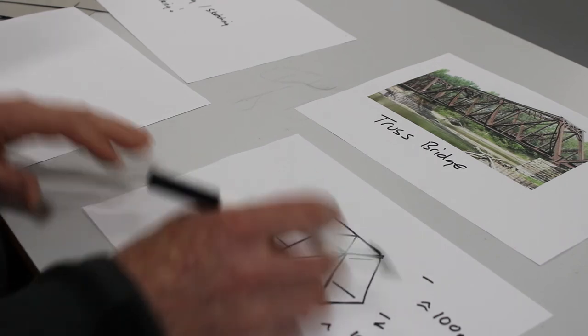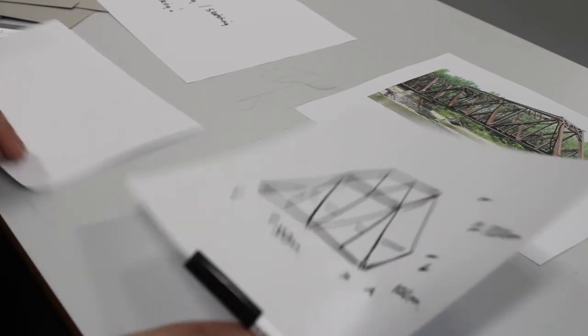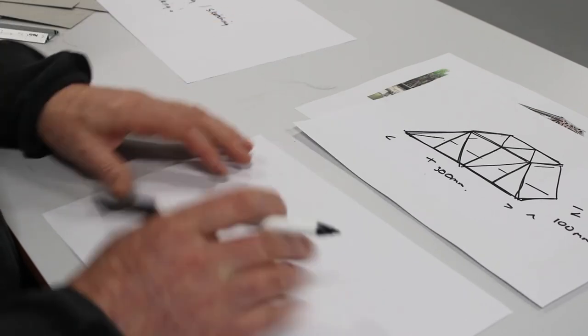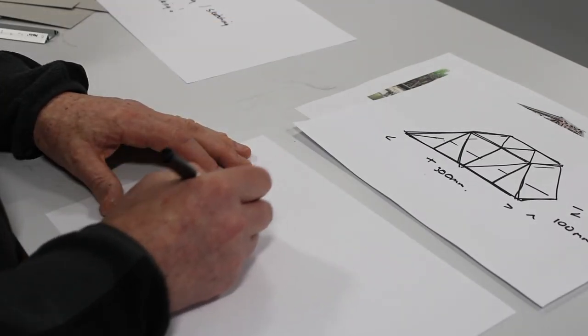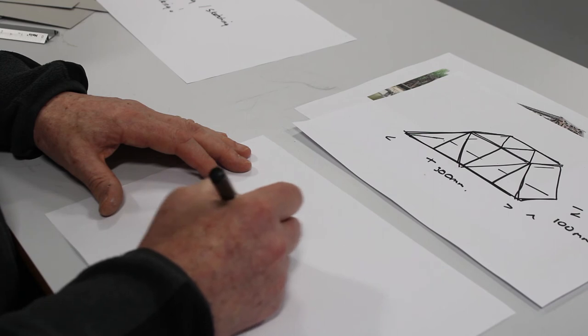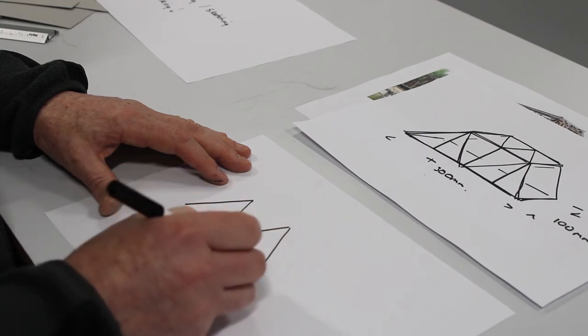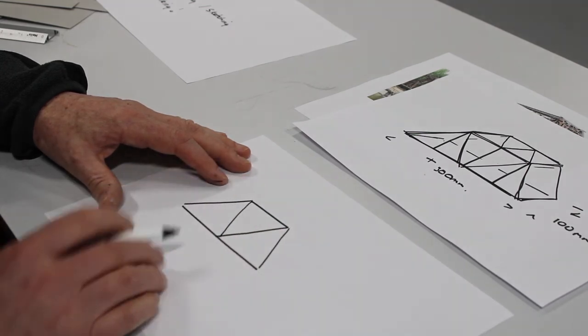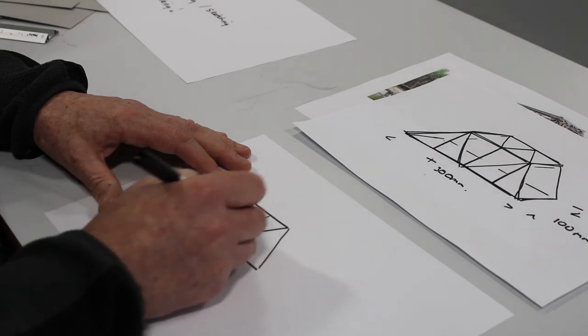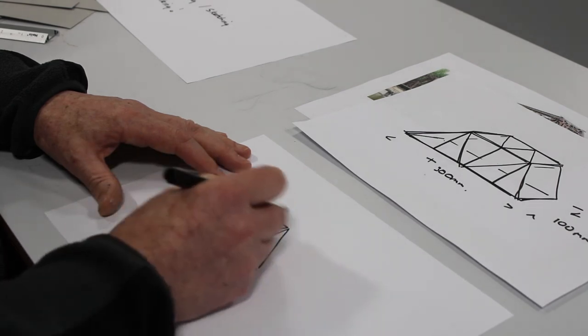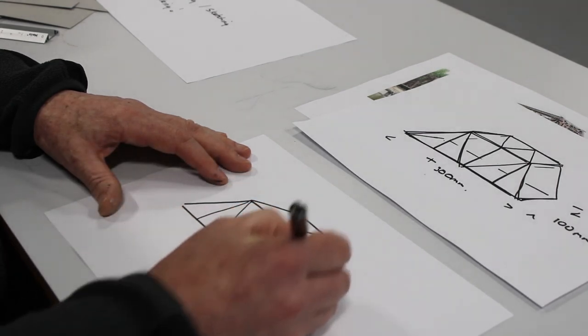I'm going to try and draw that again so I get in my mind it can have two triangles with supports and then the same on the other side.